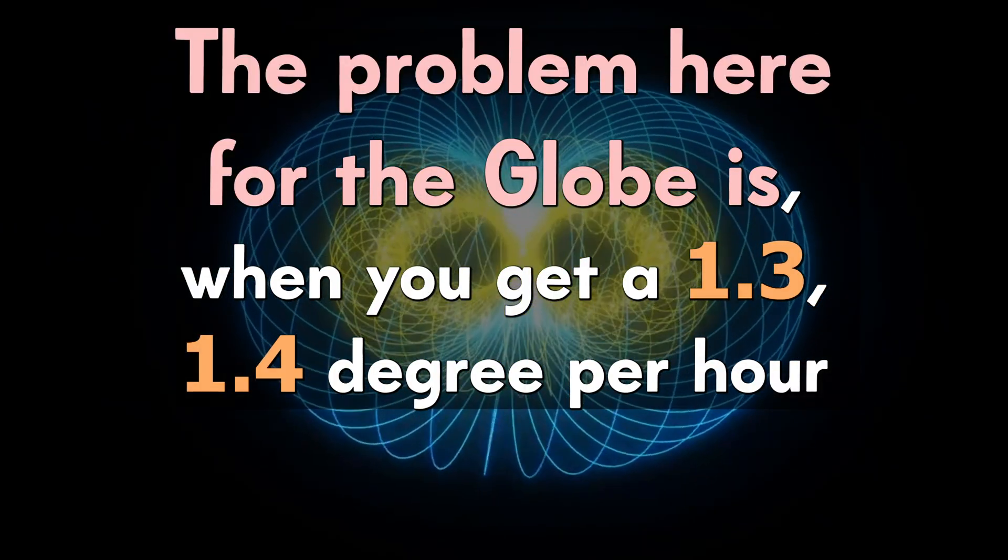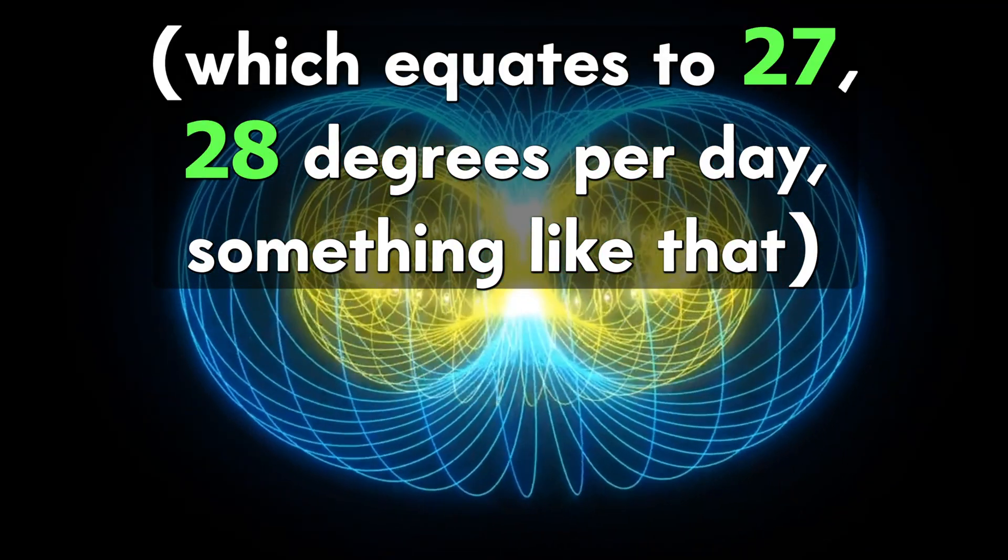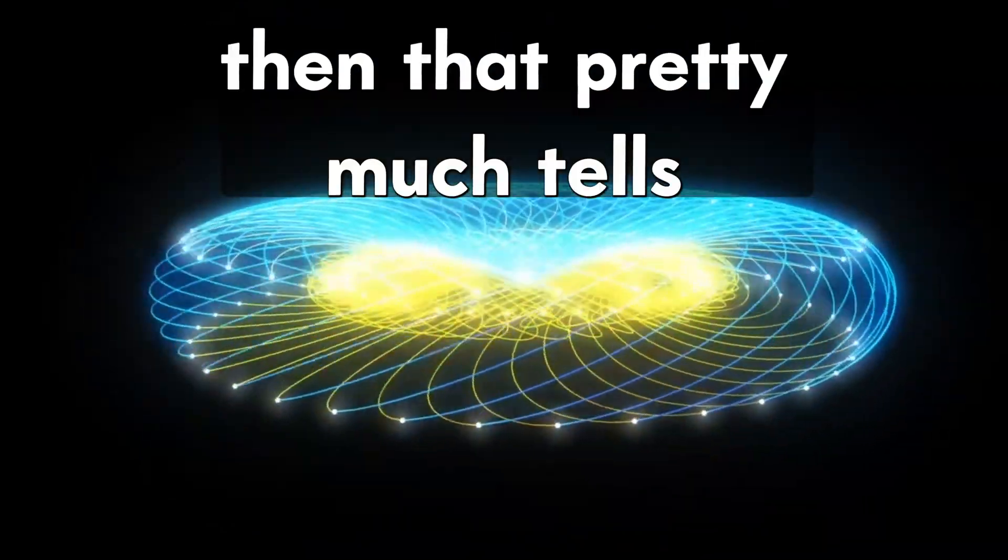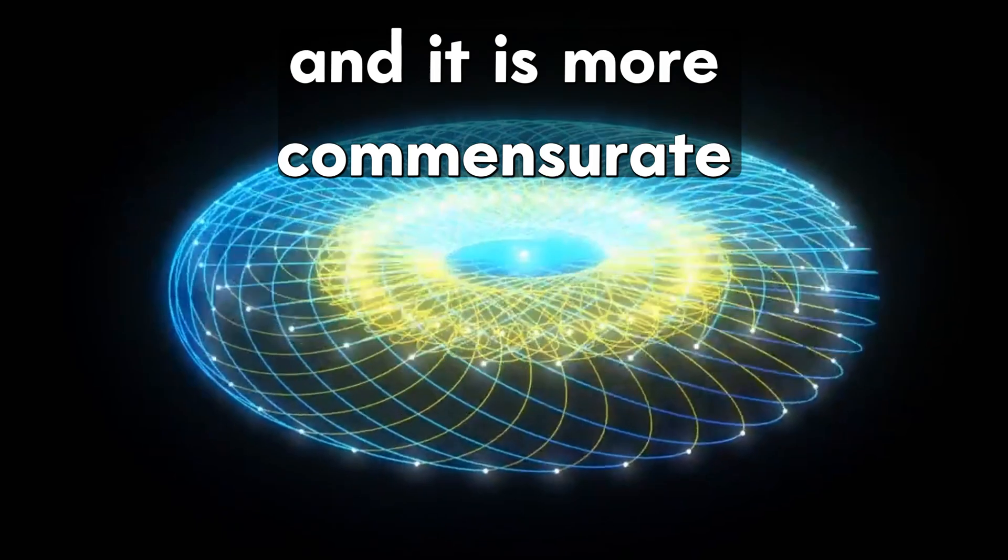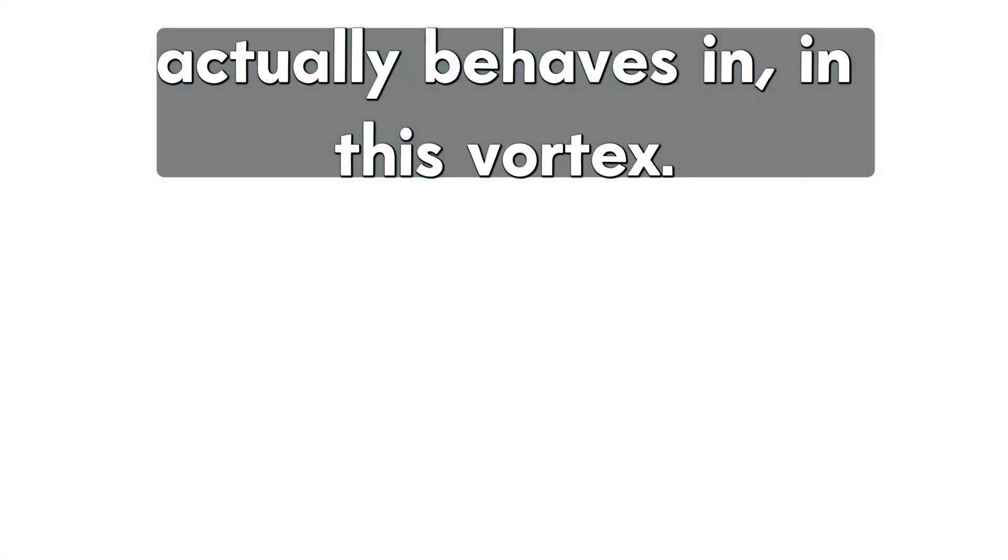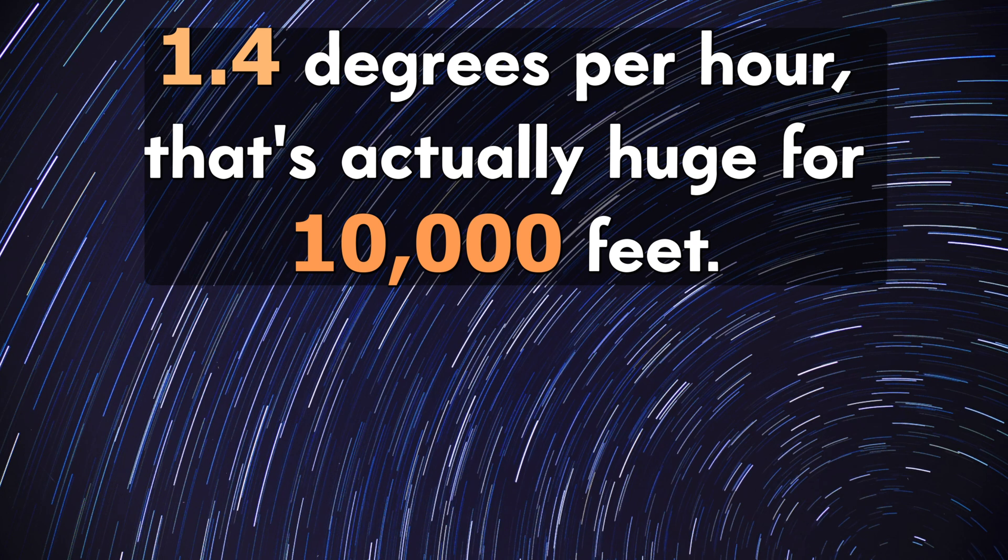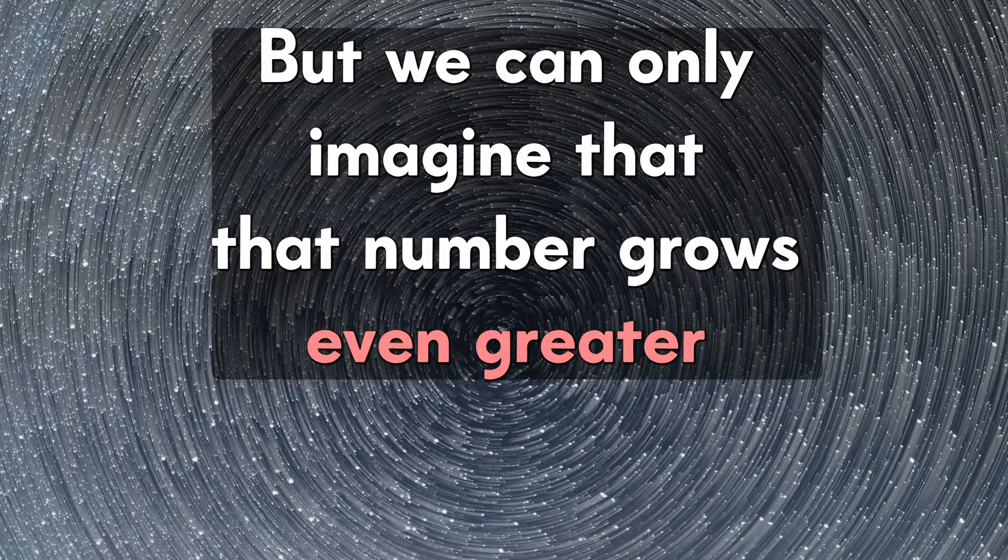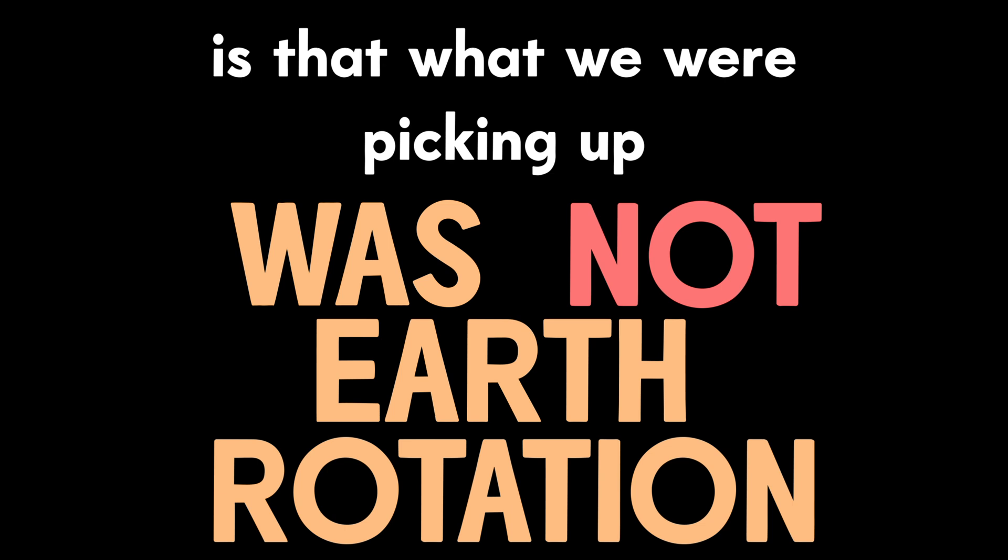The problem here for the globe is when you get a 1.3, 1.4 degree per hour, which equates to 27, 28 degrees per day, something like that difference in rotation. Then that pretty much tells you unequivocally that what we are picking up is not Earth rotation. And it is more commensurate with that vortexual behavior that science has always told us that the luminiferous ether actually behaves in this vortex. We did this multiple times and every single time, we weren't expecting such a huge variance.